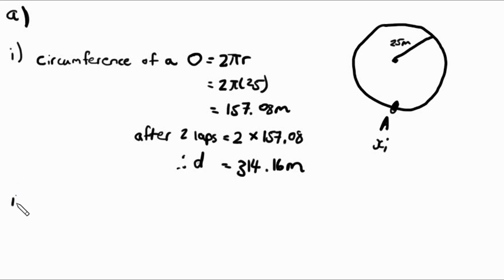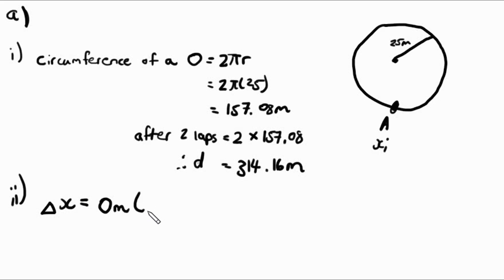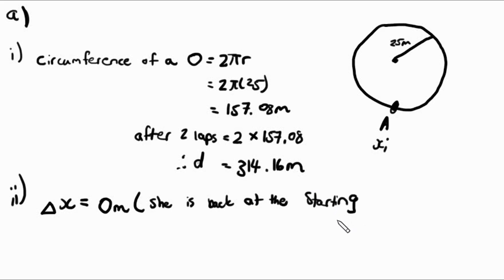The second part of A asks us to calculate her displacement. She completes two laps, so we must understand that she ends up where she began. Therefore her displacement is zero meters, because she is back at the starting point. Her initial position equals her final position, so her displacement is zero.